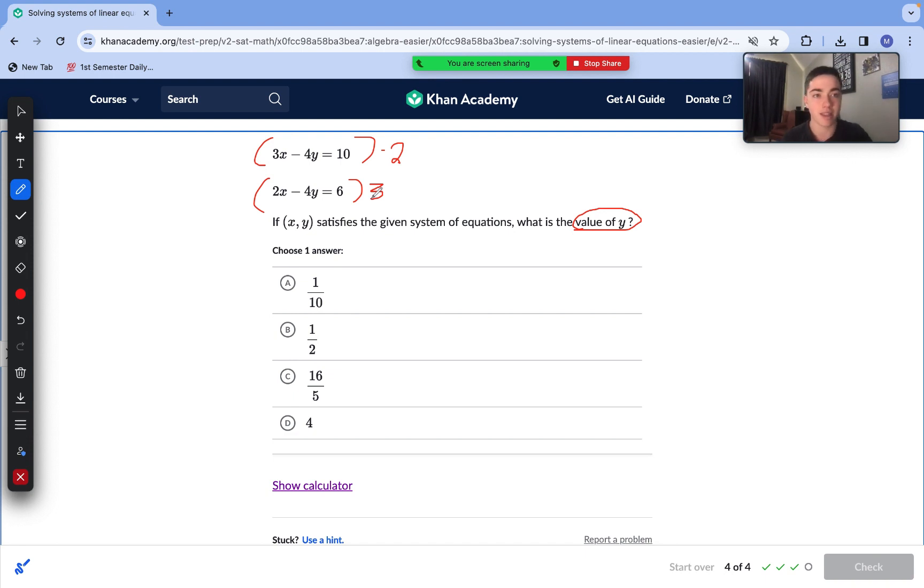So we would multiply this top by negative 2 and this bottom equation by 3. That way we get negative 6x and 6x, these two opposing values that can then eliminate each other. So let's go ahead and multiply here. We are left with negative 6x plus 8y equals negative 20. And then our bottom equation when we multiply everything by 3, we get 6x minus 12y equals 18. Now we can go ahead and eliminate. These cancel out. 8y minus 12y is negative 4y. Negative 20 plus 18 is negative 2. Negative 4y equals negative 2. We can just divide each side by negative 4. We are left with y equals 2 fourths or just 1 half. So the value of y is 1 half.